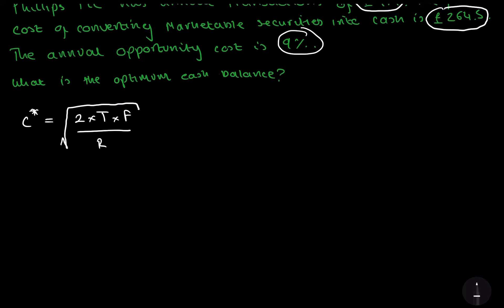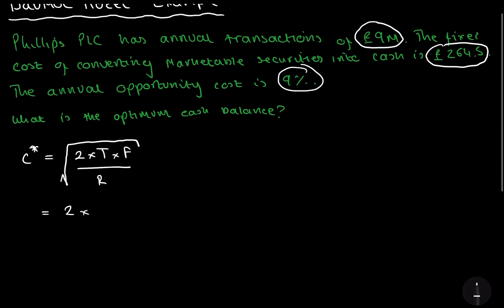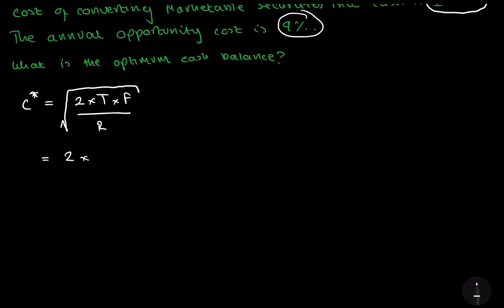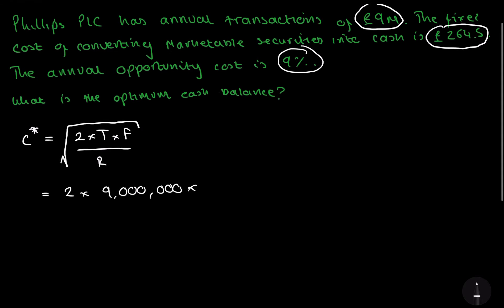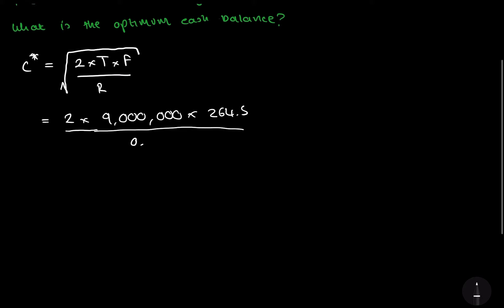So it's fairly easy from here but I also want to show a little bit of explanation. I'll just plug in the values first. 2 times the total transaction cost, £9 million, it's best to write it out in full so you don't get confused, times the £264, all over, this is where people can mess up...